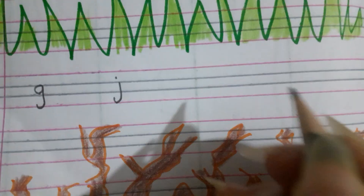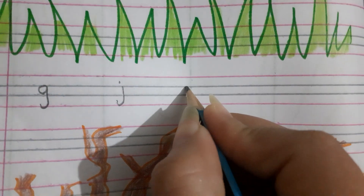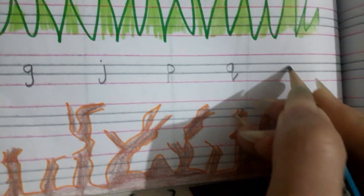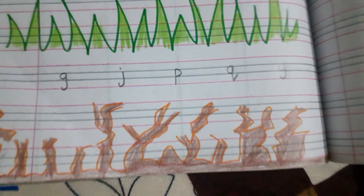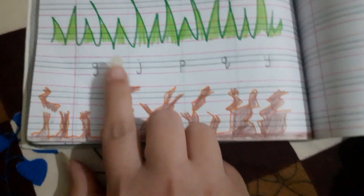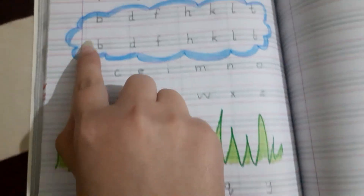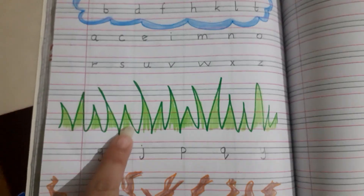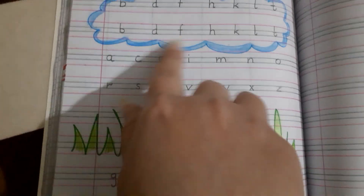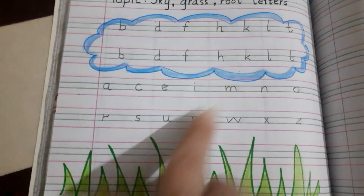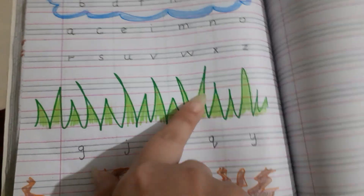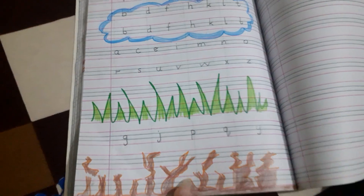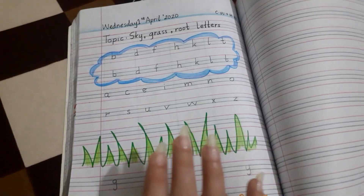The root letters are: G, P, Q, Y. Again, you have to give your space. For sky letters I have made a cloud, for grass letters I have drawn grass, and for root letters I have drawn a root. You have to do this work exactly as shown in your notebook, as your classwork and homework as well.